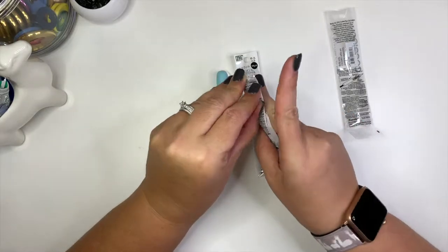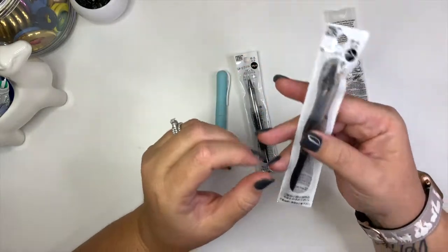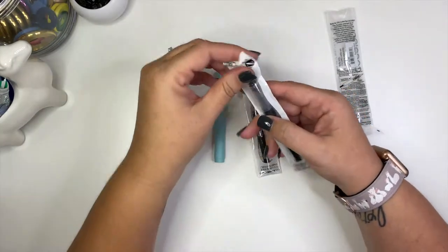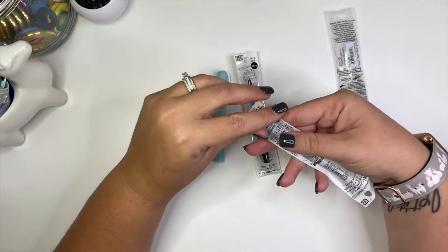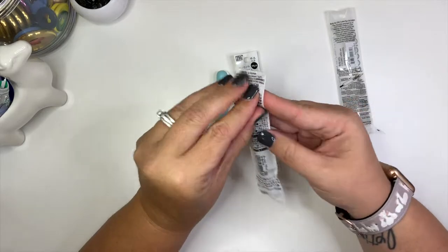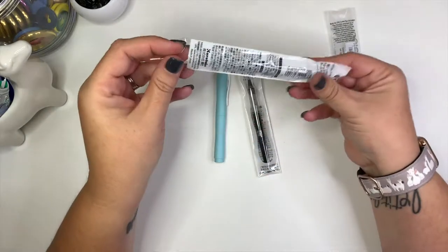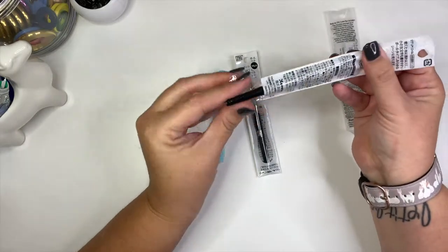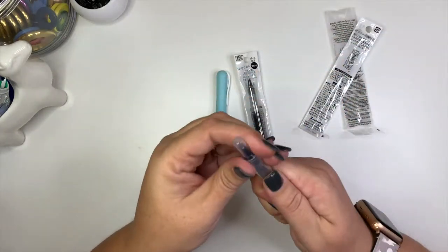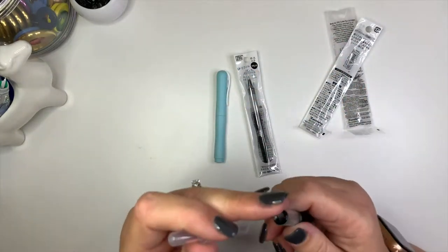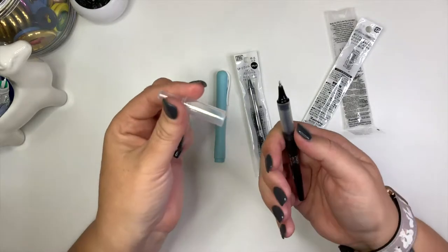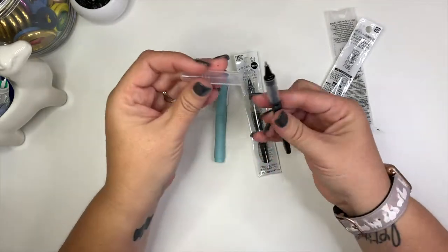open one of them for now because they're the same. These are a 0.3, which is a lot smaller of a tip than I'm normally used to writing with. Like 0.5s are usually my sweet spot, but they don't actually look super thin. These are more of like a ballpoint pen, which I actually kind of like.